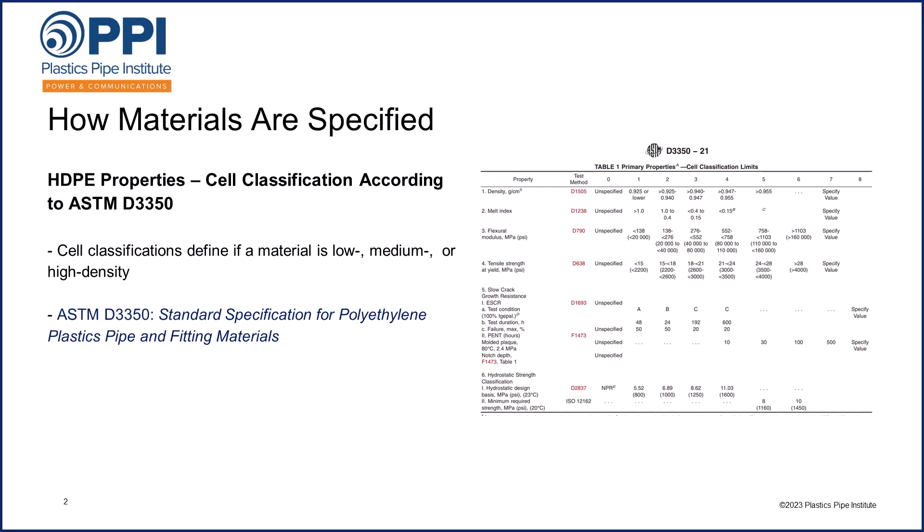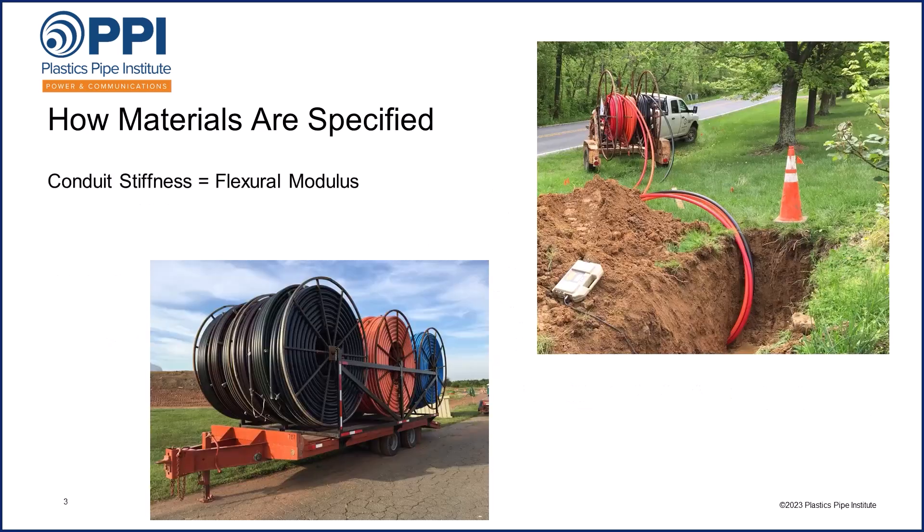This table is an excerpt from the ASTM D3350 standard, which is referenced by all the HDPE Conduit product standards for basic material properties. As different PE materials can have, by design, very different properties, we need to specify those properties that are important and the level of each property that we are looking for.